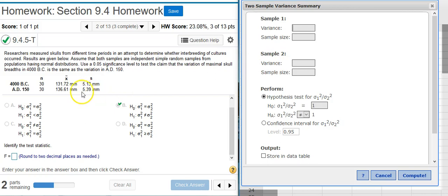So notice here, the sample that's listed second has the higher standard deviation. So even though this sample is listed second, it's actually going to be sample number one.